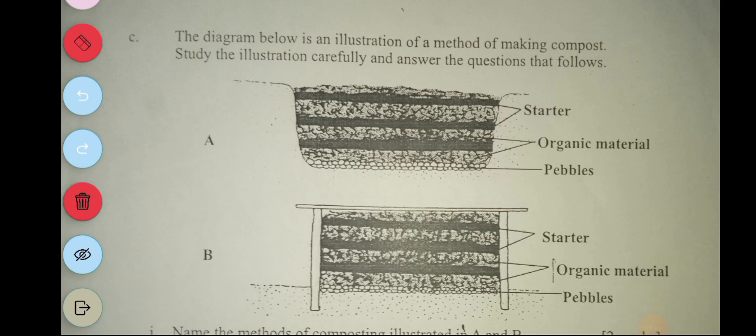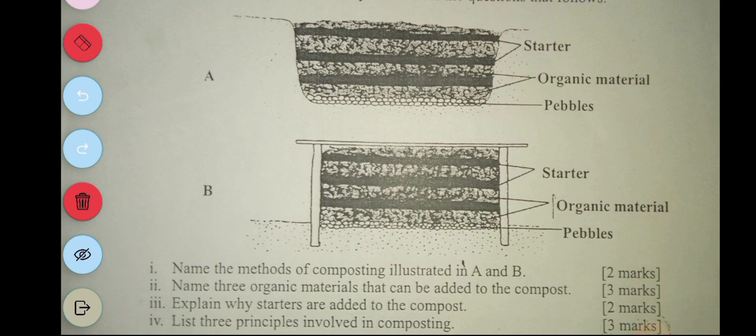The next question says: the diagram below is an illustration of a method of making compost. Study the illustration carefully and answer the questions that follow. We have A and B with starter, organic material and pebbles. And the questions that follow.